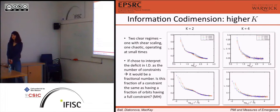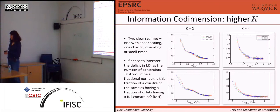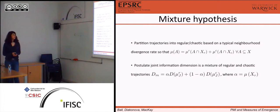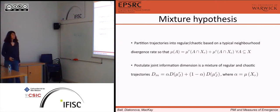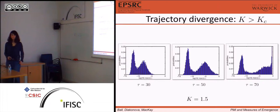This leads us to postulating the mixture hypothesis: there seem to be two clear regimes, one chaotic and one regular. What if all that happens in this map is just a mixture of what happens to regular trajectories and what happens to chaotic trajectories? Is it just as simple as that? We postulate the mixture hypothesis, which essentially says: what if our gamma is just a result of our information dimension of the joint distribution being a sum in proportions of the information dimension of the chaotic and regular components?